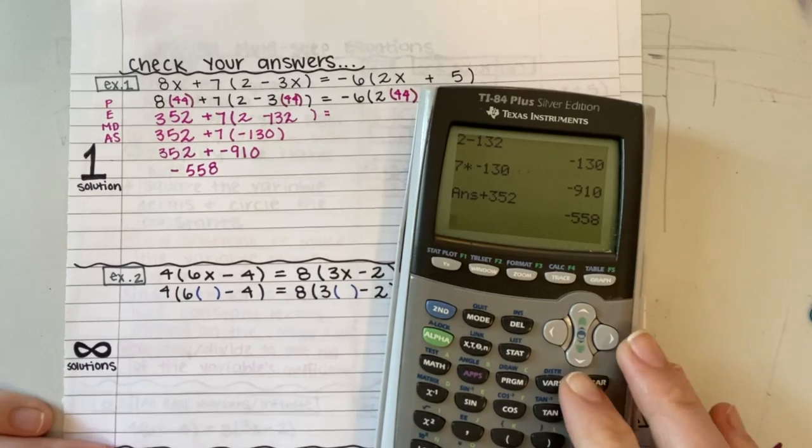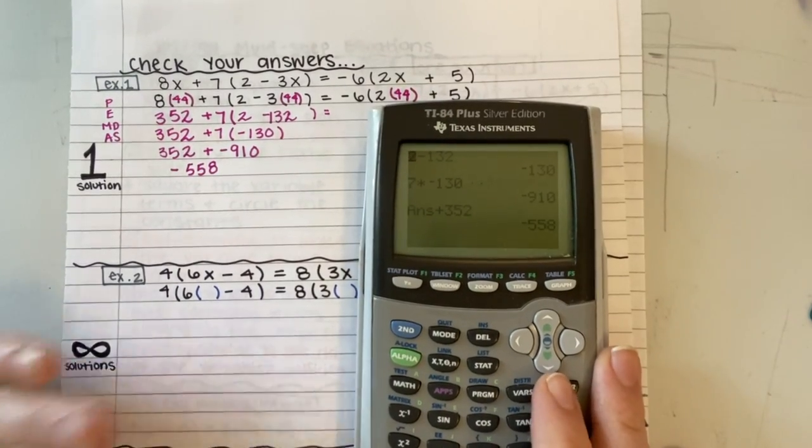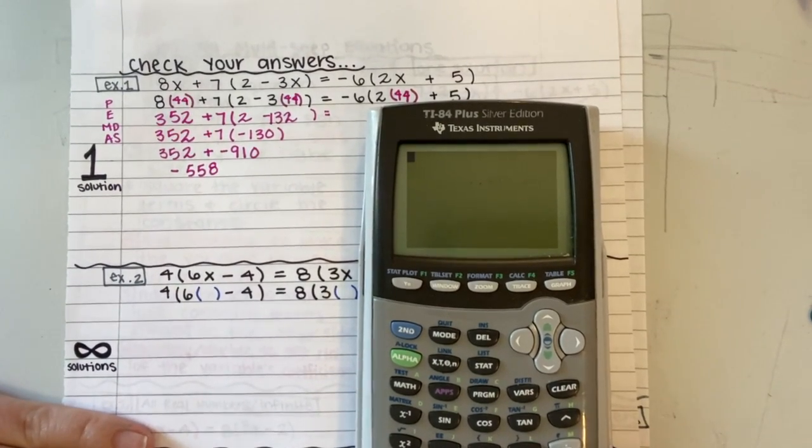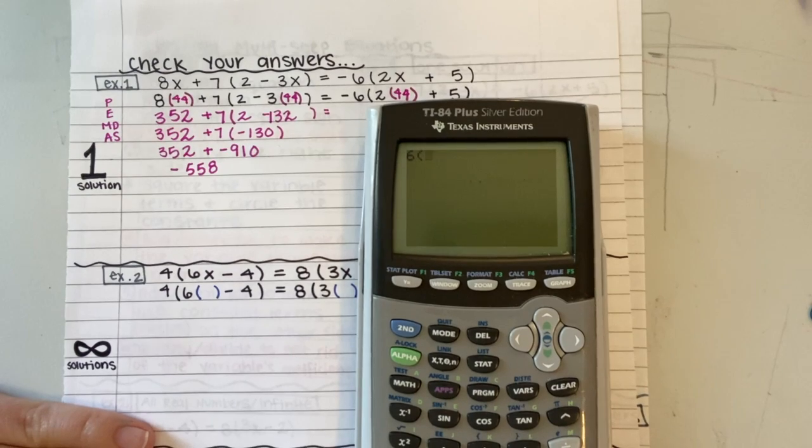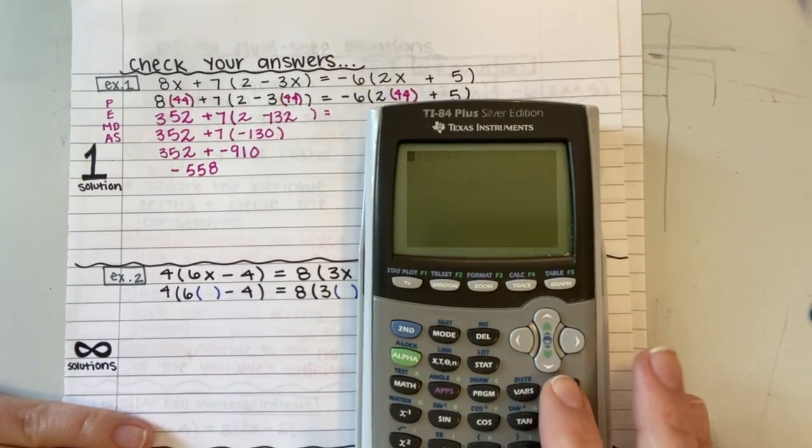You don't have to do it with the order of operations. That was just a quick refresh. Because this is a smart calculator, it does the order of operations for me. So if I plug in my other side, oops, I forgot the negative sign.